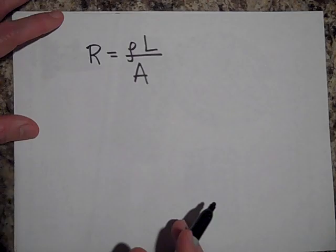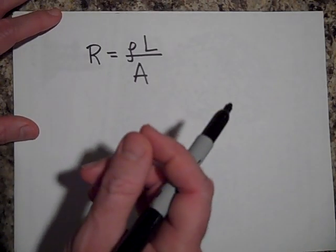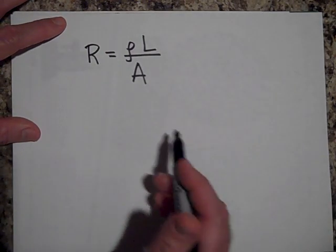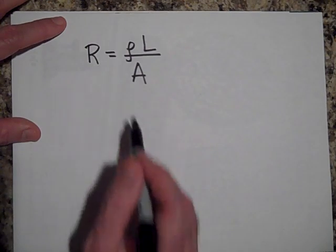And then A is the cross-sectional area of the wire. So if you want to have a lot of resistance, then you make your cross-section really tiny and you'll get a very big resistance.